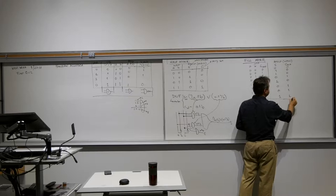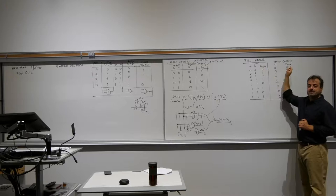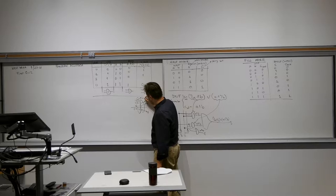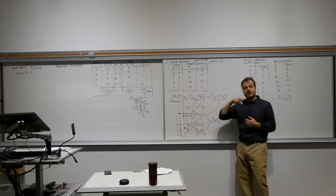I hope everybody understands the difference between C input and C output. When I'm at a certain column, the carry from the previous column is the input carry. I'm producing the sum output and producing this carry for the next column — that's the output carry. So I may have an input carry from the previous column and I'm producing a carry for the next column.